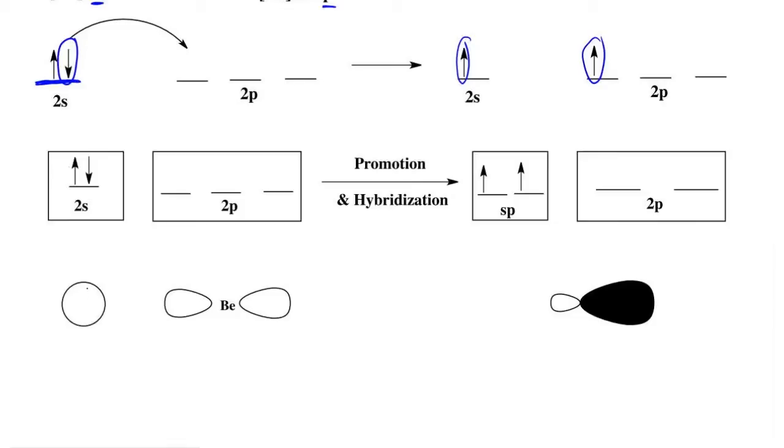We have our electrons in the 2s and remember the shape of s is a sphere. We want to promote it to the p. And p looks like a dumbbell. What's going to happen is this electron is going to jump over here.